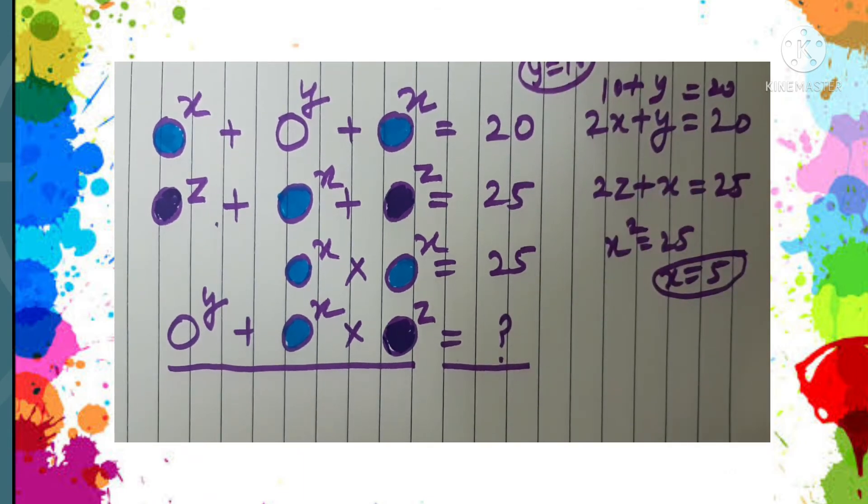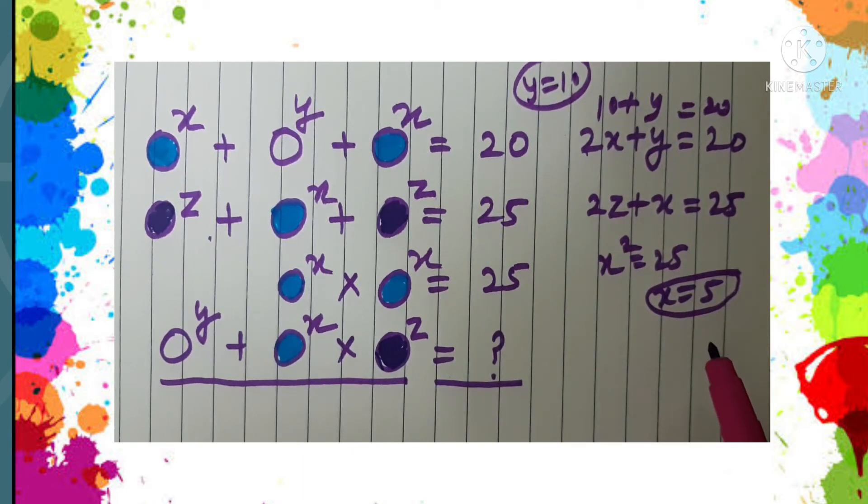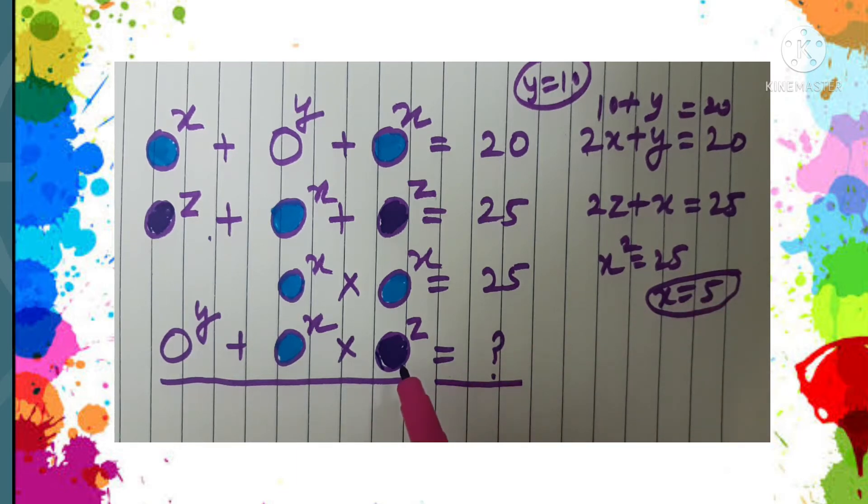We have found Y as 10, X as 5. Now let us see how we get the value of Z.